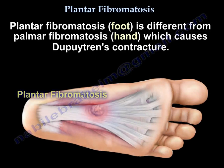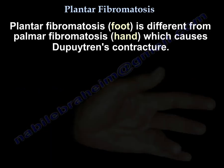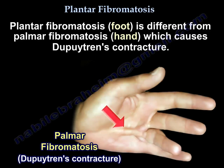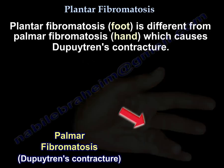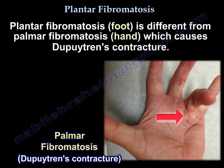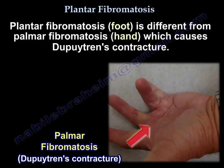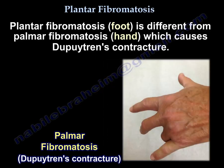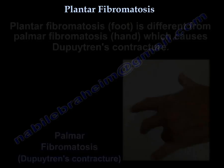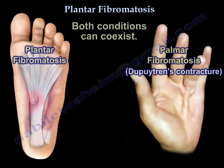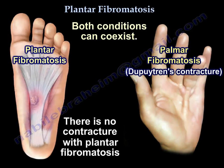Plantar fibromatosis of the foot is different from palmar fibromatosis of the hand, which causes Dupuytren's contracture — an example of which is shown here. Both conditions can coexist, but there is no contracture with plantar fibromatosis.